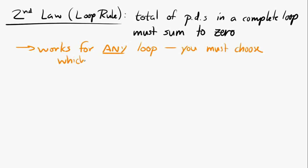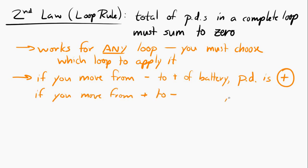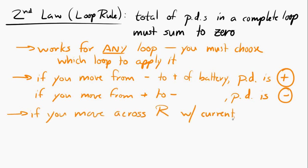Applying the loop rule depends on which direction you go around the loop. If you go from the negative terminal of a battery to the positive terminal, you have a positive potential difference across that battery. If you go the other way, it's negative. Also, if you go across a resistor with the current, you have a negative potential difference. If you go across a resistor against the current, you have a positive potential difference.